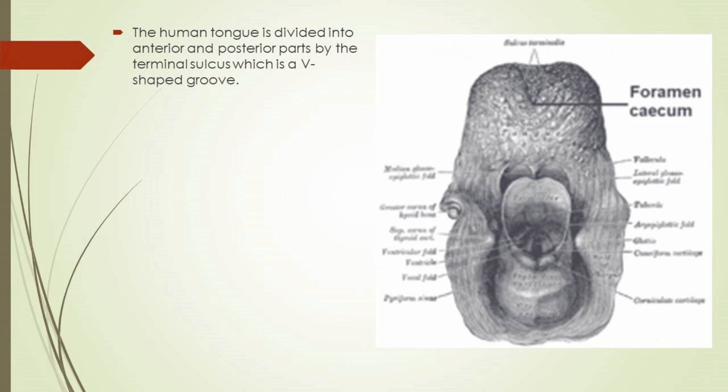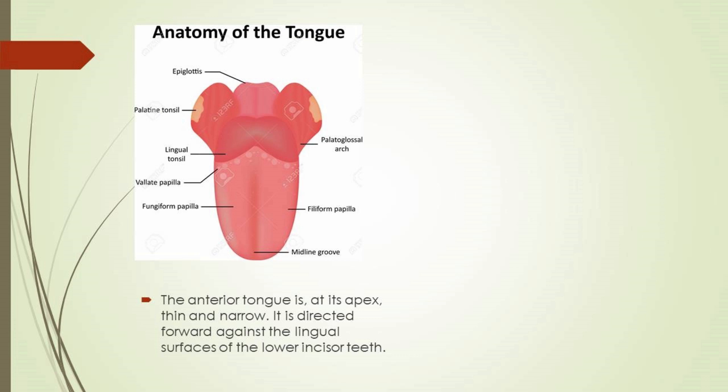The anterior oral part is the visible part situated at the front, making roughly two-thirds the length of the tongue. The posterior pharyngeal part is closest to the throat, roughly one-third of its length. These parts differ in terms of their embryological development and nerve supply.